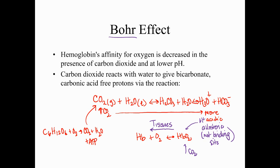The Bohr effect is named for Christian Bohr, father of Niels Bohr of quantum mechanics fame — both won Nobel Prizes. As blood becomes more acidic, H+ binds to hemoglobin that has O2 bound, and CO2 also binds to it. This forces the equilibrium toward the unbound state, meaning oxygen is released.